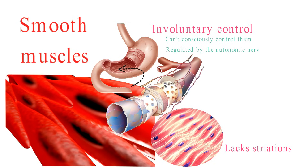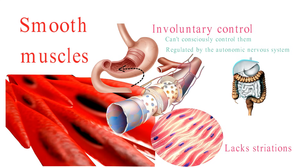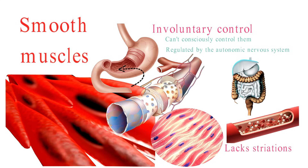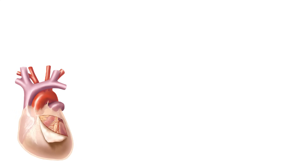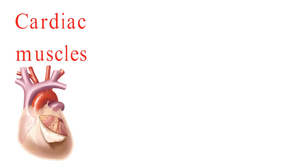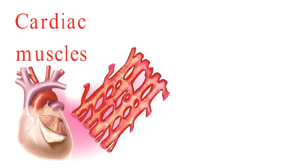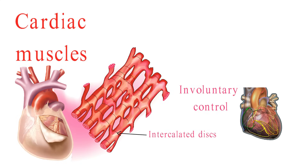Unlike skeletal muscle, smooth muscle lacks striations and looks smooth under the microscope. Smooth muscles are involuntary, which means we can't consciously control them. Instead, they're regulated by the autonomic nervous system. Smooth muscles are the unsung heroes of our bodies, facilitating processes like digestion and regulating blood flow. And finally, cardiac muscle tissue — this specialized muscle is exclusively found in the heart. It's striated, similar to skeletal muscle, but with a distinctive branching pattern and intercalated discs. Cardiac muscle is also involuntary, but it has its own electrical conduction system that regulates the heartbeat.